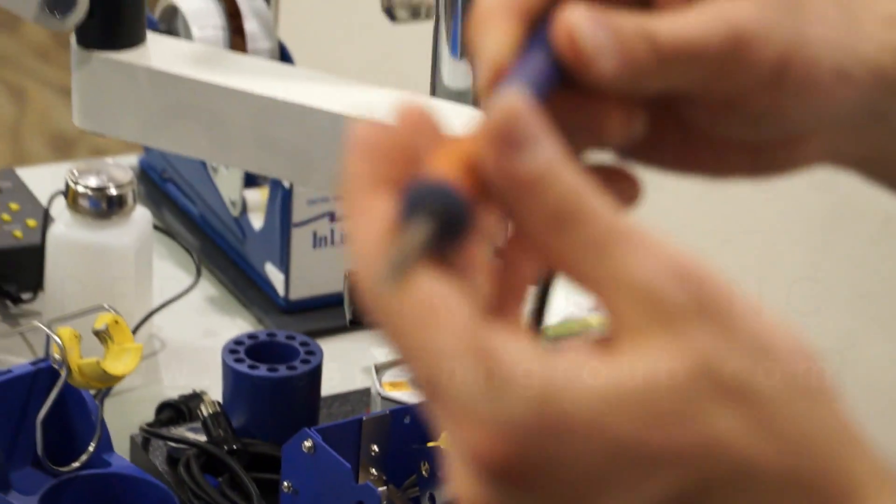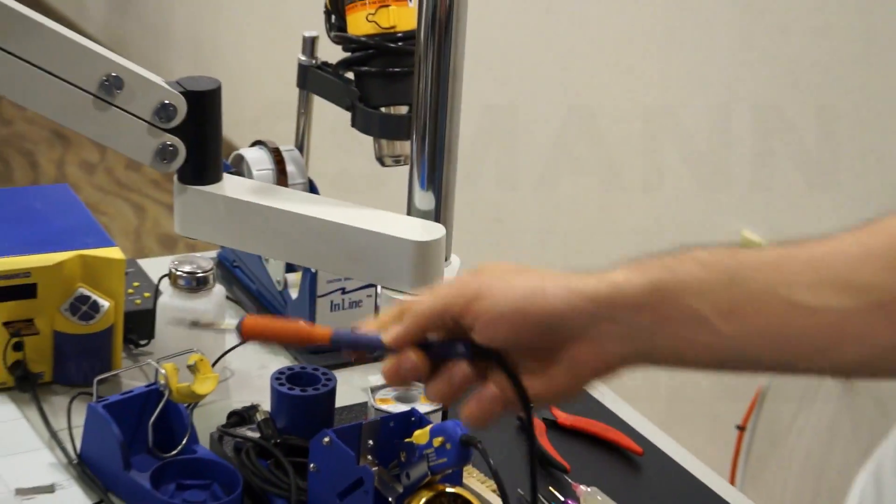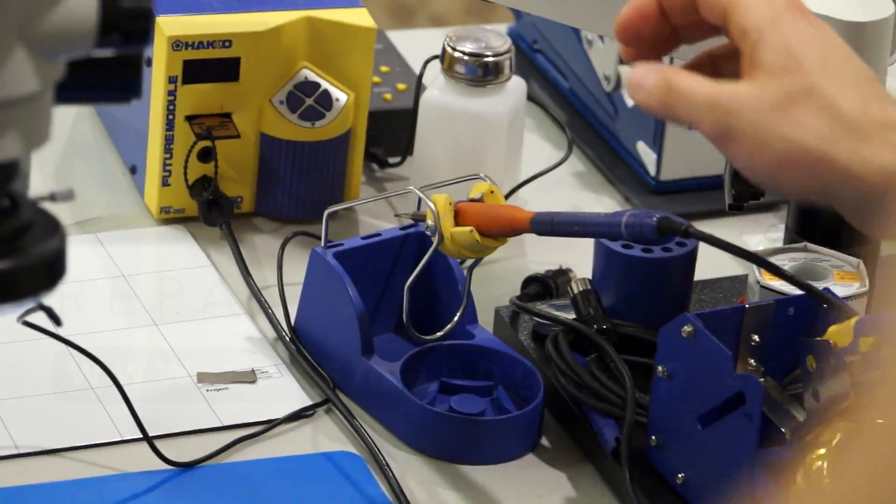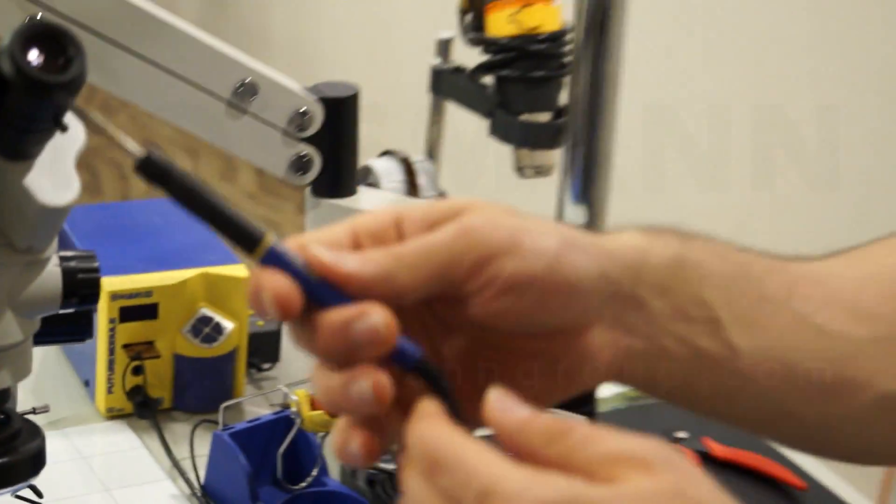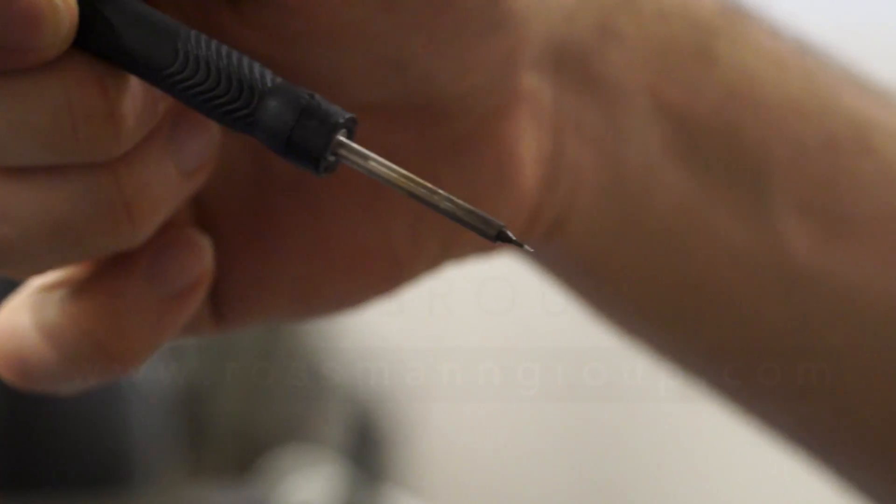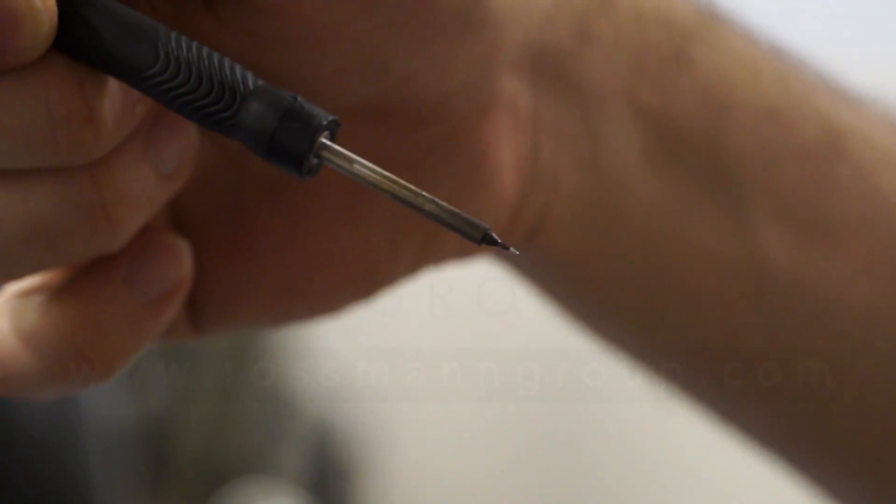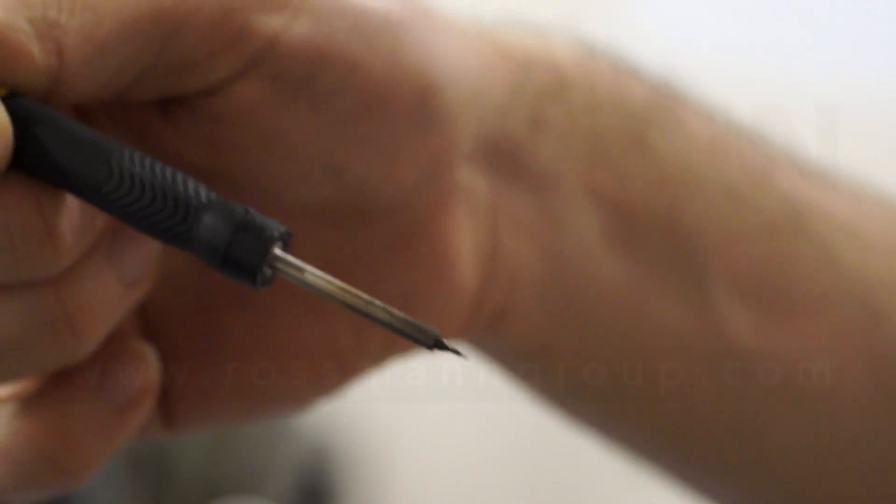You also get a standard iron. You get a choice between the FM2027 iron with a large selection of tips, or you can choose the FM2032 iron, which is a micro pencil. It's pretty cool. So you can choose between the larger tip or this. You get to experience everything.